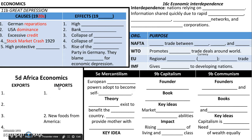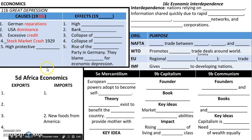Most economists and historians today believe that the depression caused by the stock market crash would have probably been pretty short — maybe only a year — but then our government, the next year in 1930, put in high protective tariffs. These tariffs raised prices and people bought even less. It started a trade war with other countries, people traded less and bought less, and this made the Great Depression worse.